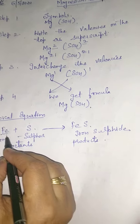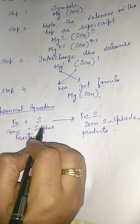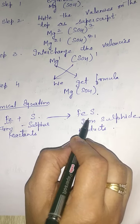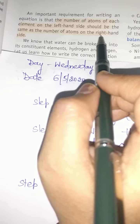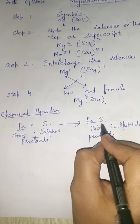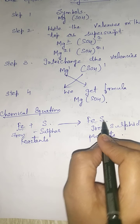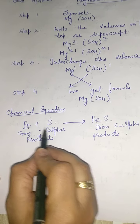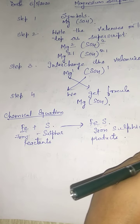I placed the symbol of iron, Fe, and for sulfur, S. When the chemical reaction takes place between these, a new compound iron sulfide is formed. An important requirement for writing an equation is that the number of atoms of each element on the left hand side should be the same as the number of atoms on the right hand side. In this example, the number of iron atoms is 1 and sulfur is 1 on both sides, so this equation is balanced.